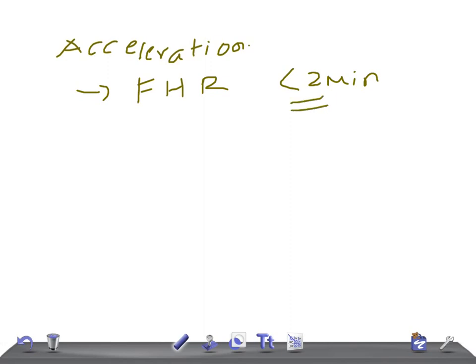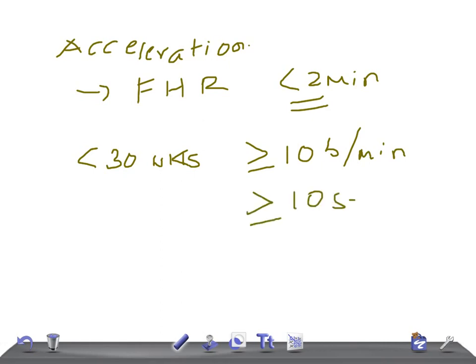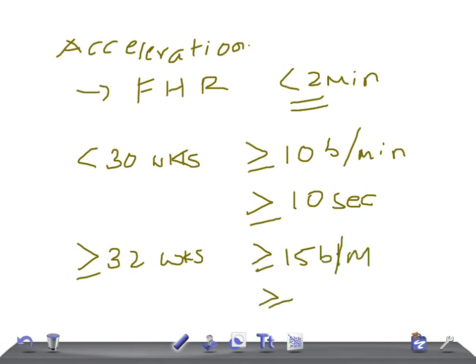Remember, this criteria can vary depending on the gestational age. If the mother is less than 32 weeks of gestation, the increase should be more than or equal to 10 beats per minute, lasting 10 seconds or more. If she is more than or equal to 32 weeks, this increase should be more than or equal to 15 beats per minute, lasting more than or equal to 15 seconds.